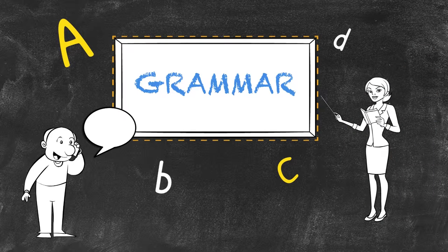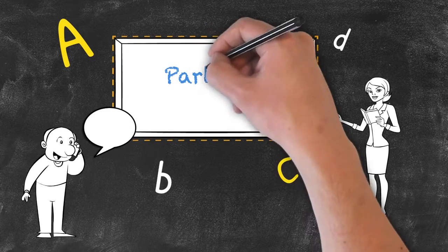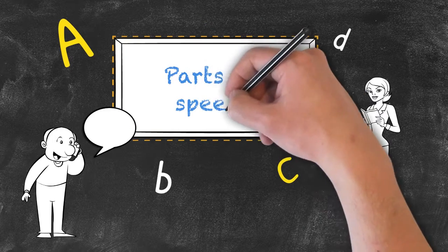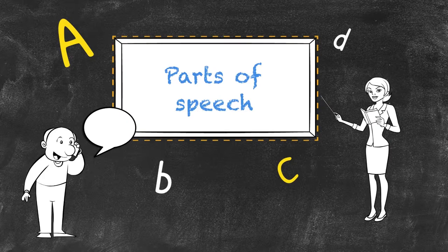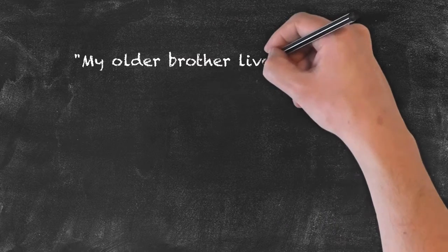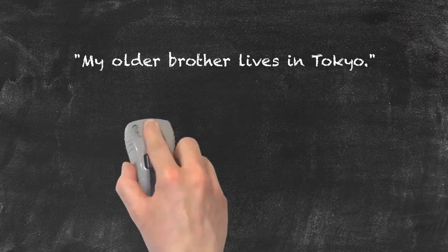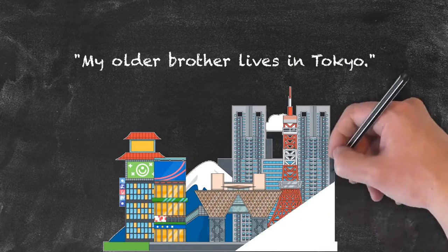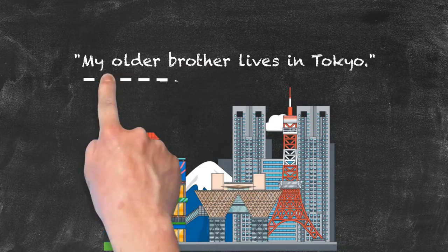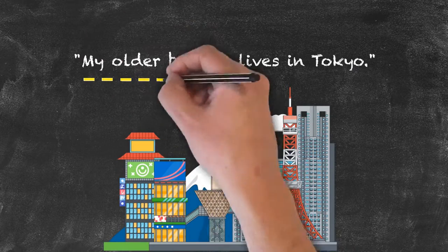These basic parts of grammar are called parts of speech. Each part of speech has a certain function within a sentence. Our example sentence here is: my older brother lives in Tokyo. Each one of these words is a certain part of speech, which we'll have a look at in just a minute.